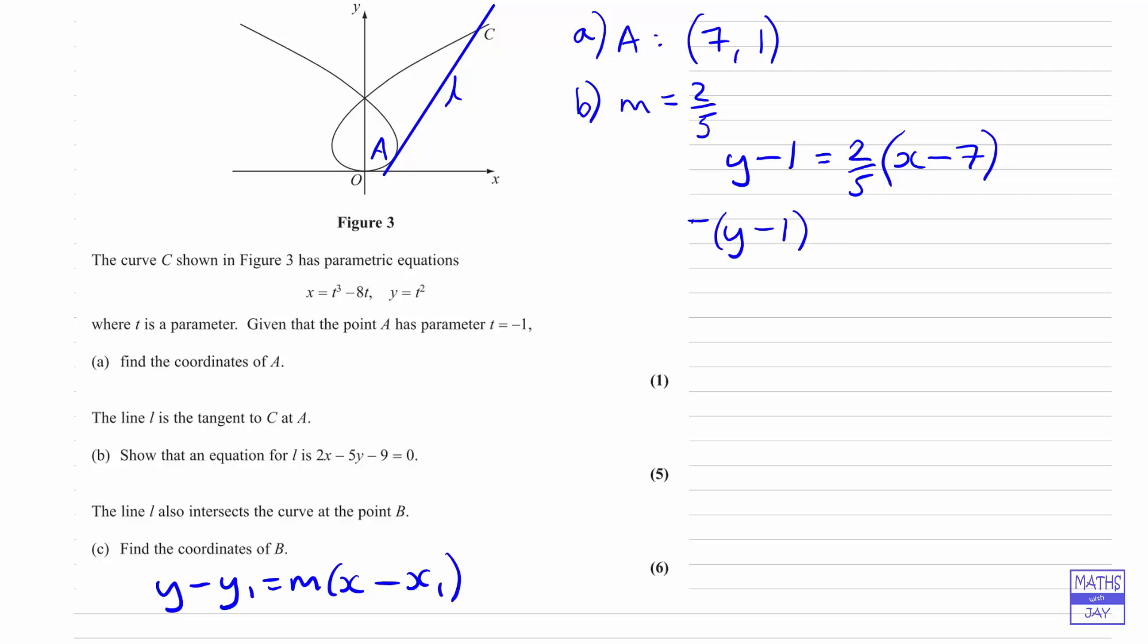I'll multiply across by 5 so we only deal with whole numbers. We've got 5y on one side and 2x on the other, which looks good. Multiplying out: 5y minus 5 equals 2x minus 14. Rearranging gives 2x minus 5y minus 9 equals 0 as required. That's part b done.